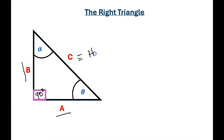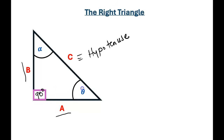That is the hypotenuse of this triangle. The sides A and B are called the legs of this triangle. And depending on which angle we are going to look at — either theta or alpha — we can name A and B with their appropriate names. We will see this in the next coming videos when we are doing trigonometry.